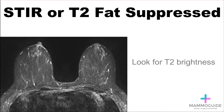On STIR or T2 fat-suppressed sequences, you are looking for T2 brightness. This can be cysts, inflammation, edema, or any other finding within the breast or associated surrounding tissues.